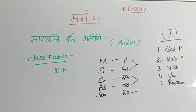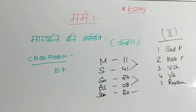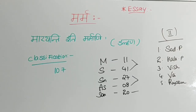107 Marmas were considered by our Acharyas. These 107 Marmas were classified into five varieties: Mamsa Marma, Sira Marma, Snayu Marma, Asthi Marma, and Sandhi Marma. Mamsa Marma — 11; Sira Marma — 41; Snayu Marma — 27; Asthi Marma — 8; Sandhi Marma — 20.